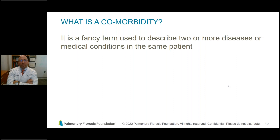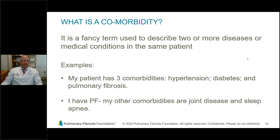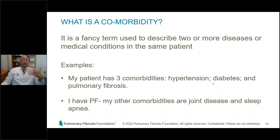A term I want to introduce is comorbidity — basically a fancy term used to describe two or more diseases or medical conditions in the same patient. For example, you might say: my patient has three comorbidities — hypertension, diabetes, and pulmonary fibrosis. Or: I have pulmonary fibrosis and my other comorbidities are joint disease and sleep apnea. The only reason I mention this term is that if you follow the medical literature, it's helpful to know the terminology that doctors and researchers use when talking about other conditions.